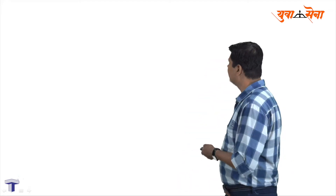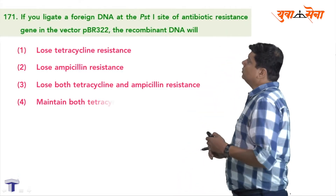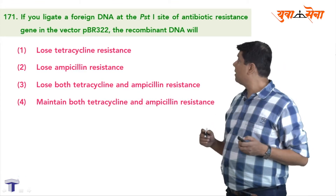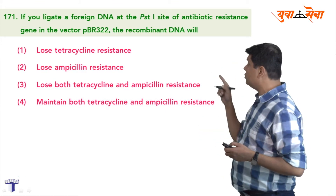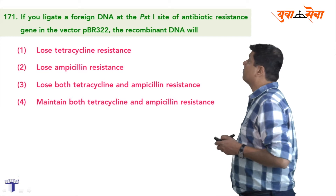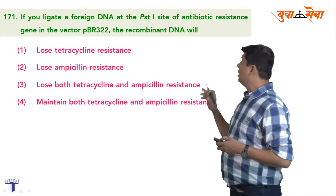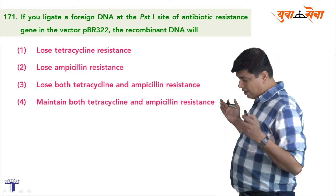Hello students, let us discuss question number 171. The question is: if you ligate a foreign DNA at the PST1 site of the antibiotic resistant gene in the vector pBR322, the recombinant DNA will —